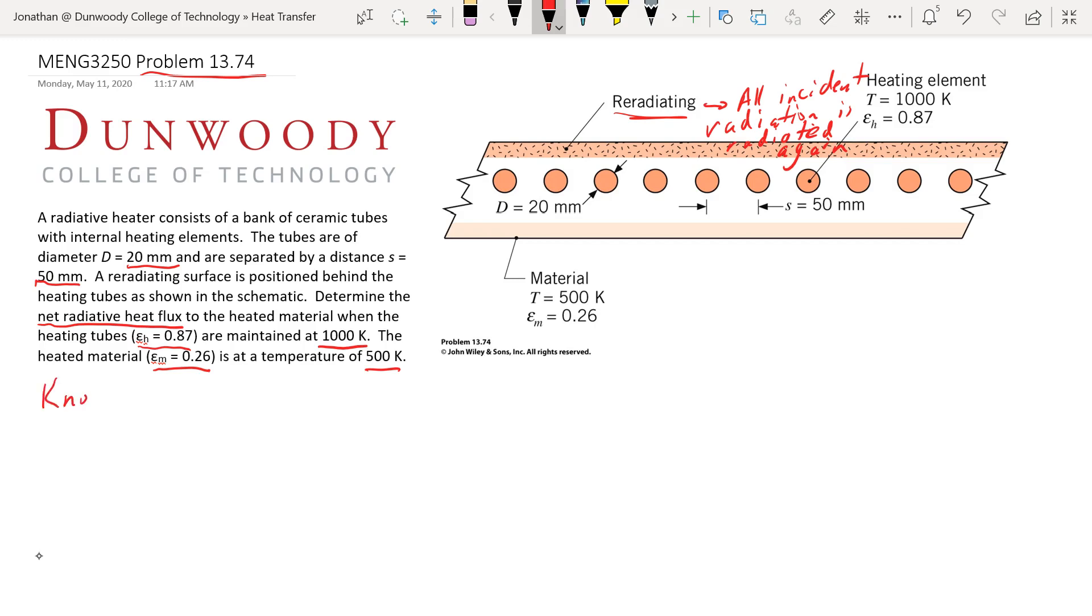So what do we have for knowns? We have known tube spacing and size with given temperature. Known emissivities, and we have the re-radiating surface.